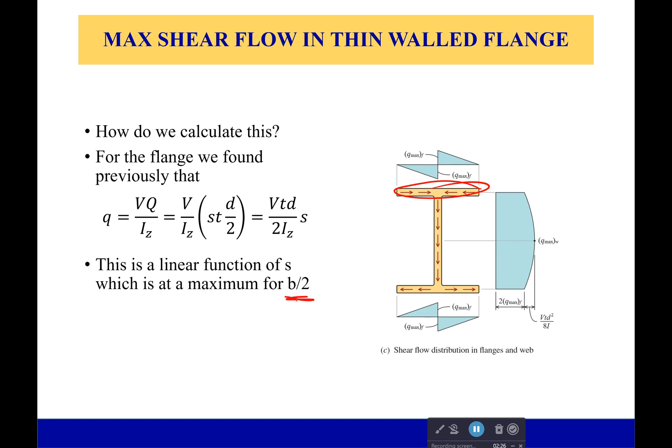So the max shear flow in the flange is simply going to be equal to this. I won't bother reading it out—it is just plugging b over 2 into this equation.